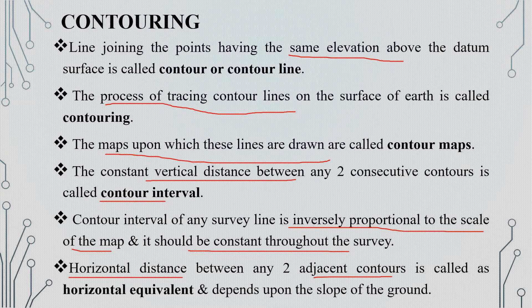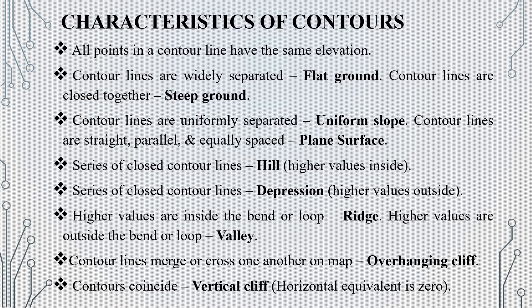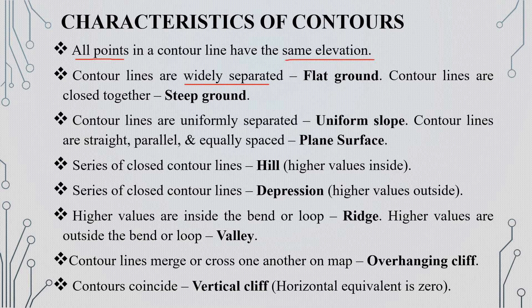The slope of the ground determines the horizontal equivalent. For contour characteristics, all points on a contour line have the same elevation. In flat ground, contour lines are widely spaced. In steep ground, contour lines are close together.